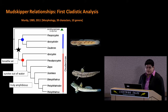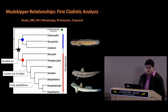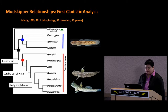Edward Murdy was the first to study the relationships between mudskippers in 1989. He used 39 morphological characters and recovered a monophyletic mudskipper clade, here denoted by the black star. Within this clade are two distinct groups: the aquatic mudskippers, denoted by the blue circle, and the terrestrial mudskippers, denoted by the red circle.